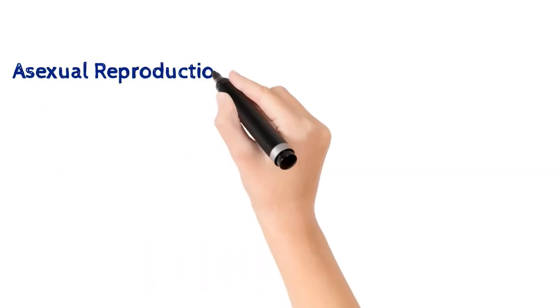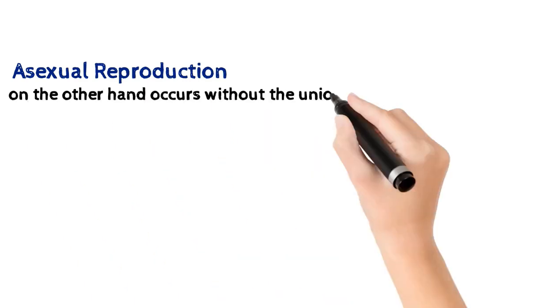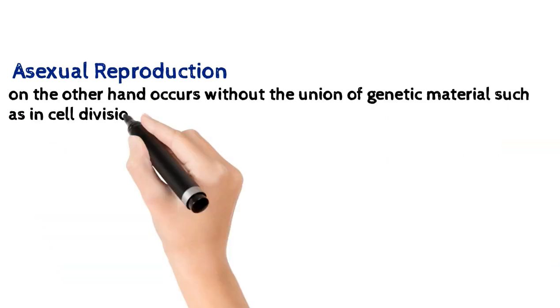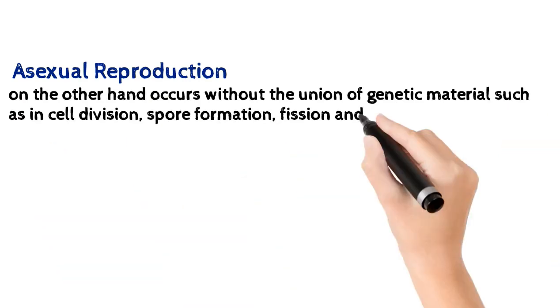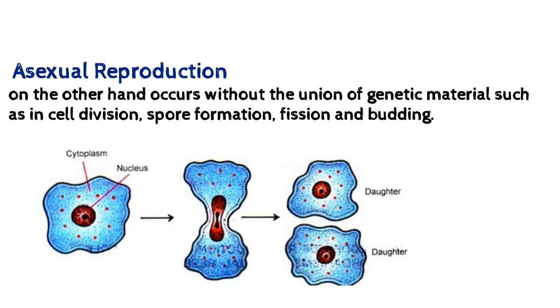Now let's talk about asexual reproduction. On the other hand, asexual reproduction occurs without the union of genetic materials, such as in cell division, in spore formation, in fission, and in budding.